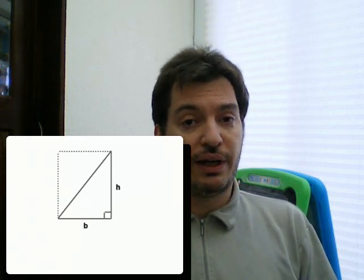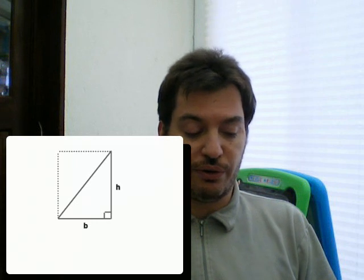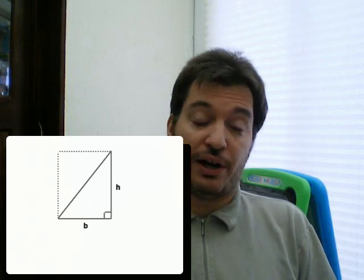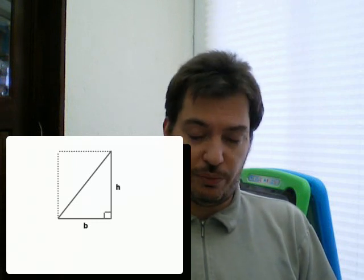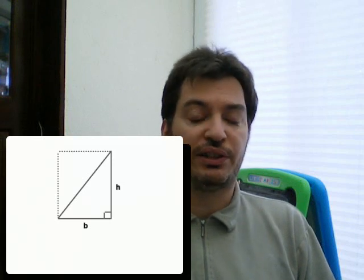And the rectangle has got a width of b and a height of h. And obviously, that's how rectangles are defined. The surface area of that rectangle is exactly b times h. No big revelation there.